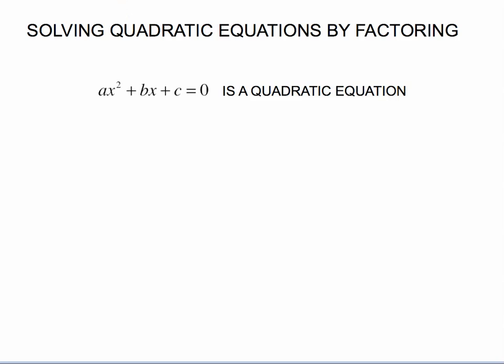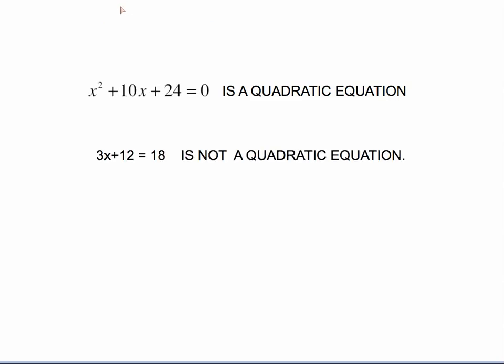It's a different kind of equation than what we have solved before. x squared plus 10x plus 24 equals 0 is an example of a quadratic equation. An equation that you solved earlier, something like 3x plus 12 equals 18, is not a quadratic equation.